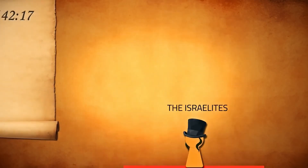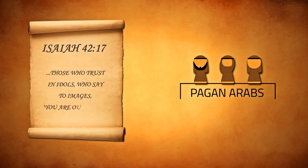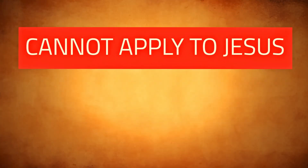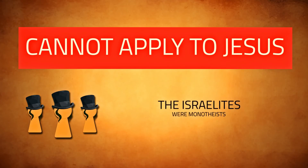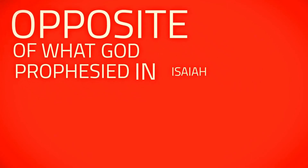In Isaiah, God emphasizes that this special person will be sent to those who trust in idols, who say to images, 'You are our gods.' The whole of Arabia at the start of Muhammad's prophethood consisted of idol worshippers. Again, this cannot be a reference to Jesus, because his people, the Israelites, were monotheists and not idol worshippers. Moreover, Jesus explicitly told his disciples to stay away from the idol-worshipping Gentiles — the exact opposite of what God prophesied in Isaiah.